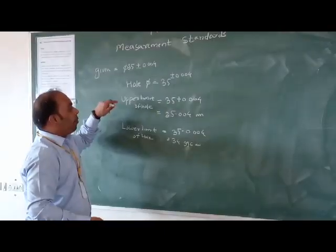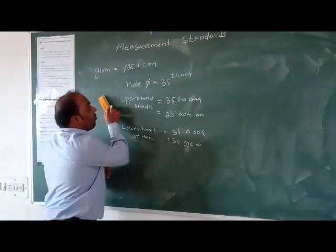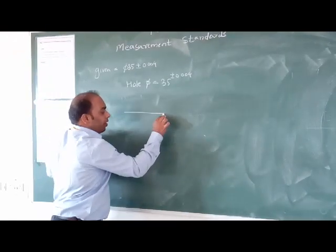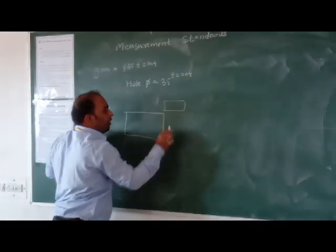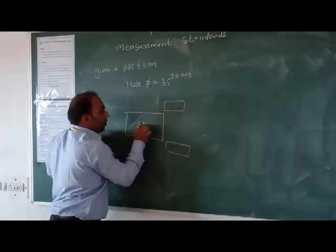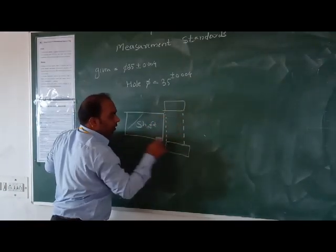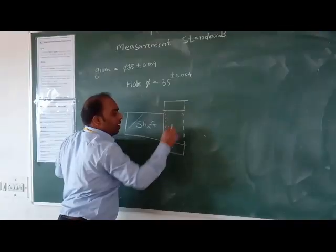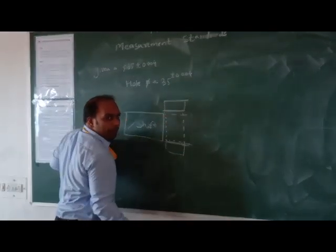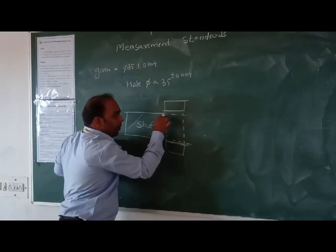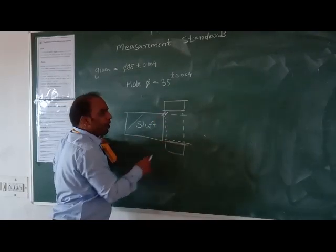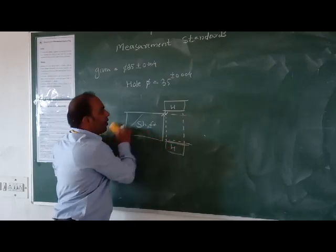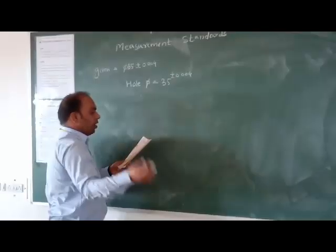Let us draw the diagram. We are drawing a shaft and designing a hole system for this shaft. This is the shaft, and we are going to draw the hole for this. Upper limit of the hole and lower limit of the hole are the two limits. This is the hole and this is the shaft.